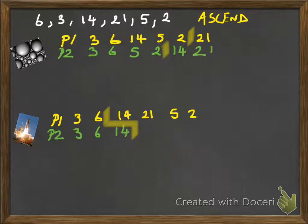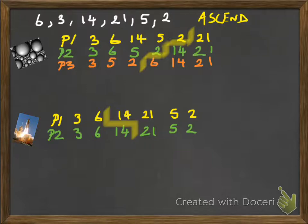Okay back to bubble. Pass 3. Consider 3 and 6 no swap. Consider 6 and 5 swap. Consider 6 and 2 swap. 6 and 14, no swap. And I know that I'm done to that point there. Down to Shuttle. We didn't fill in the rest of the numbers. We've been very bad. 21, 5 and 2.